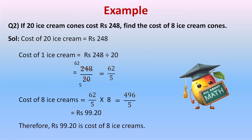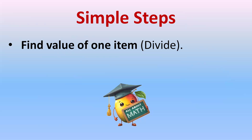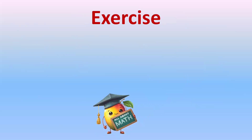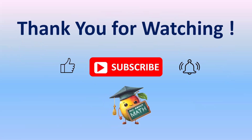Let's revise the simple steps: finding the value of one item — divide; finding the value of many items from one item — always multiply. Here is an exercise for you: if 15 candles cost rupees 30, what is the cost of 5 candles? Find the cost of one candle first by dividing, then find the cost of 5 candles by multiplying. Thank you for watching — please subscribe, like, and don't forget to hit the bell icon for notifications of our upcoming videos.